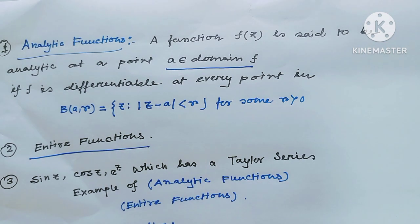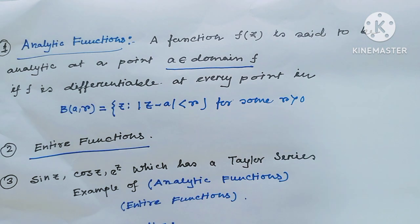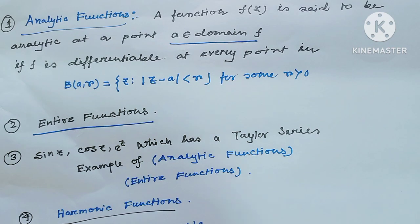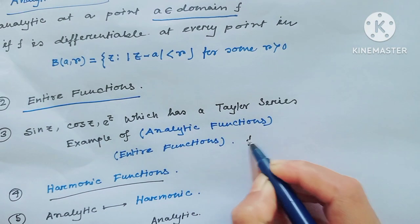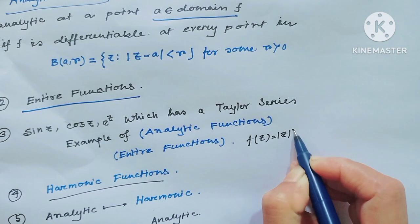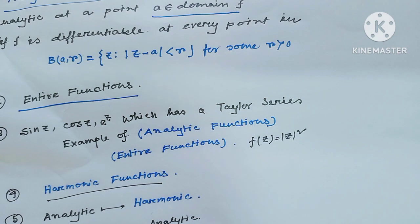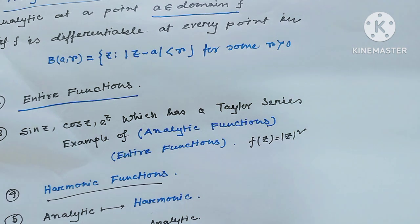Examples of analytic and entire functions include sin z, cos z, and e^z — which have Taylor series — as well as polynomial functions, rational functions, and constant functions. These are all analytic in the whole complex plane, making them entire. However, f(z) = |z|² is differentiable only at z = 0 and is not differentiable elsewhere, so it is an example of a non-analytic function.